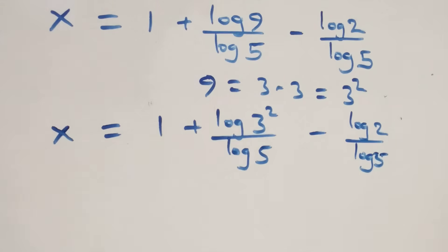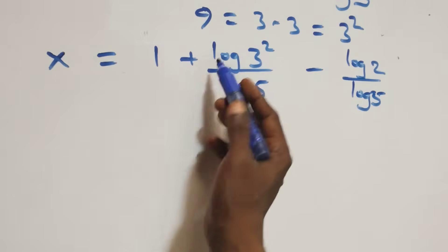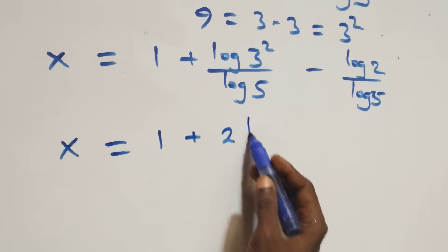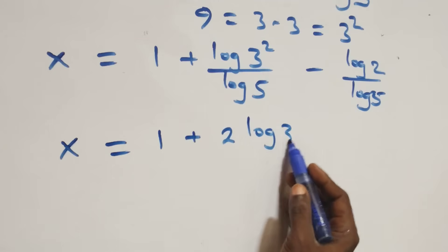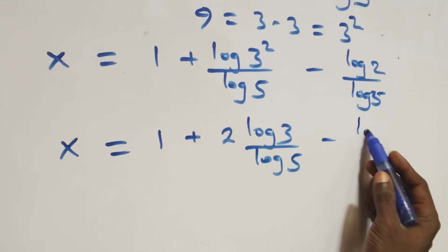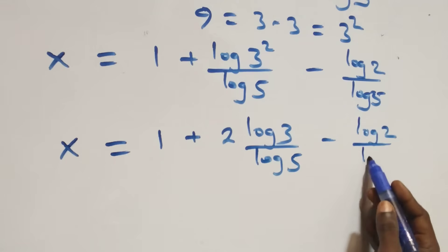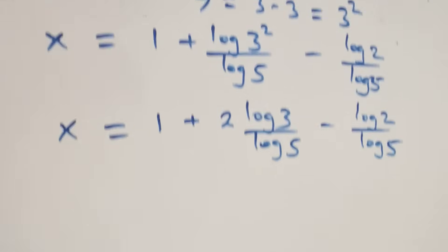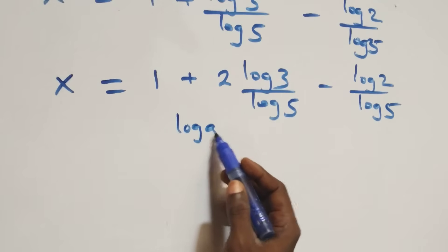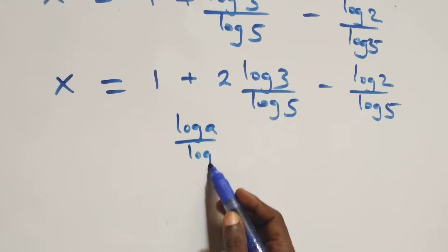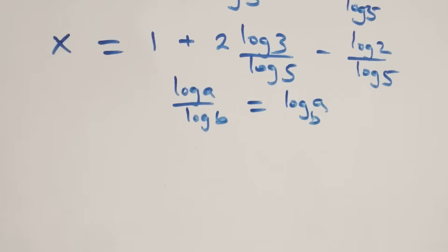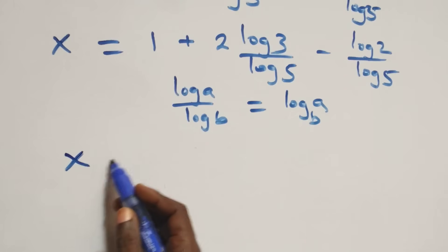Then we apply the power rule of logarithms again, and it becomes x equals to 1 plus 2·log 3 over log 5 minus log 2 over log 5. The next step, we apply the change of base formula: when we have log a over log b, this is the same as log of a to base b.